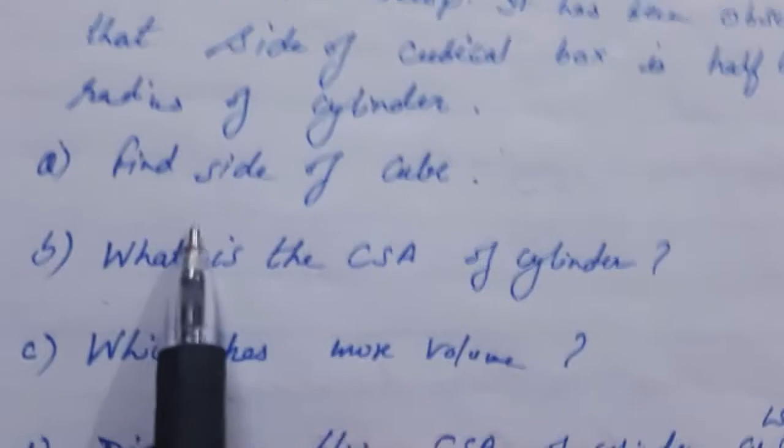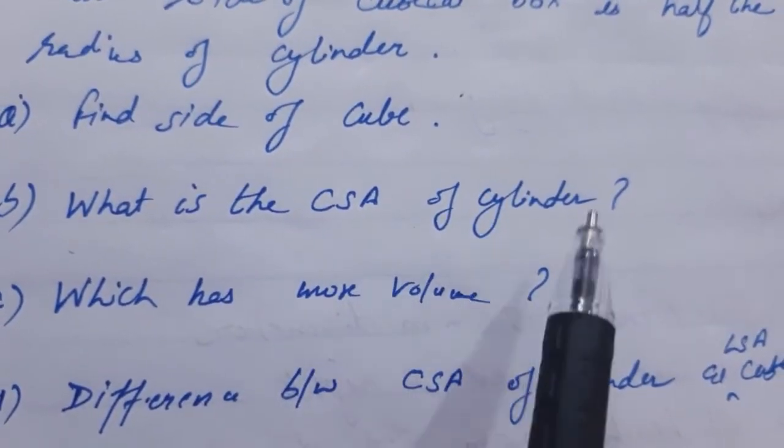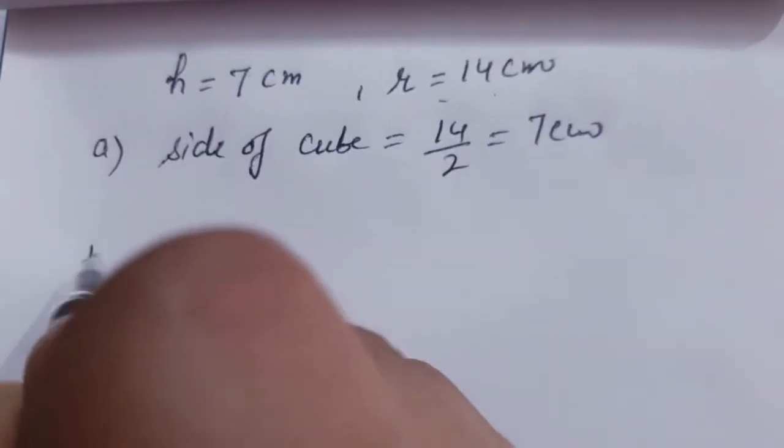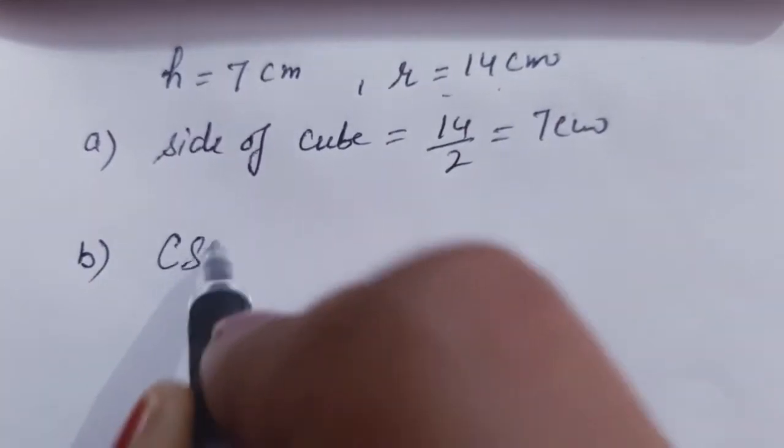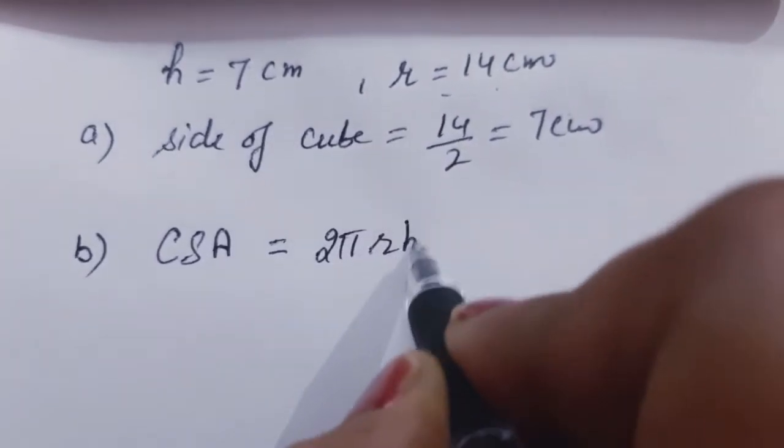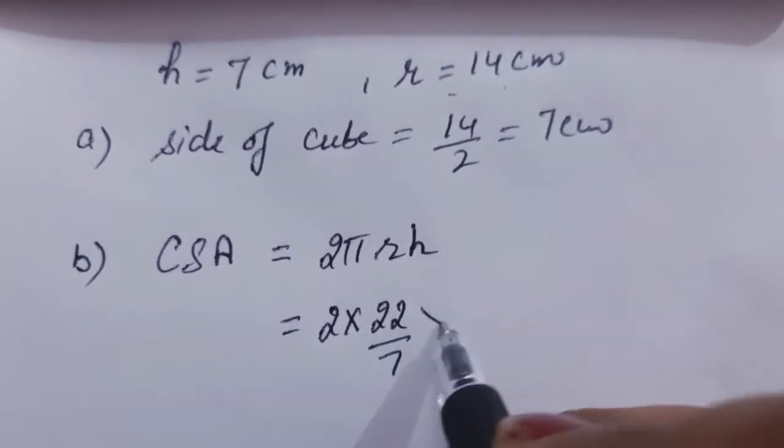Part B: What is the CSA (curved surface area) of the cylinder? The CSA equals 2πrh. Let us put the values: 2 × 22/7.